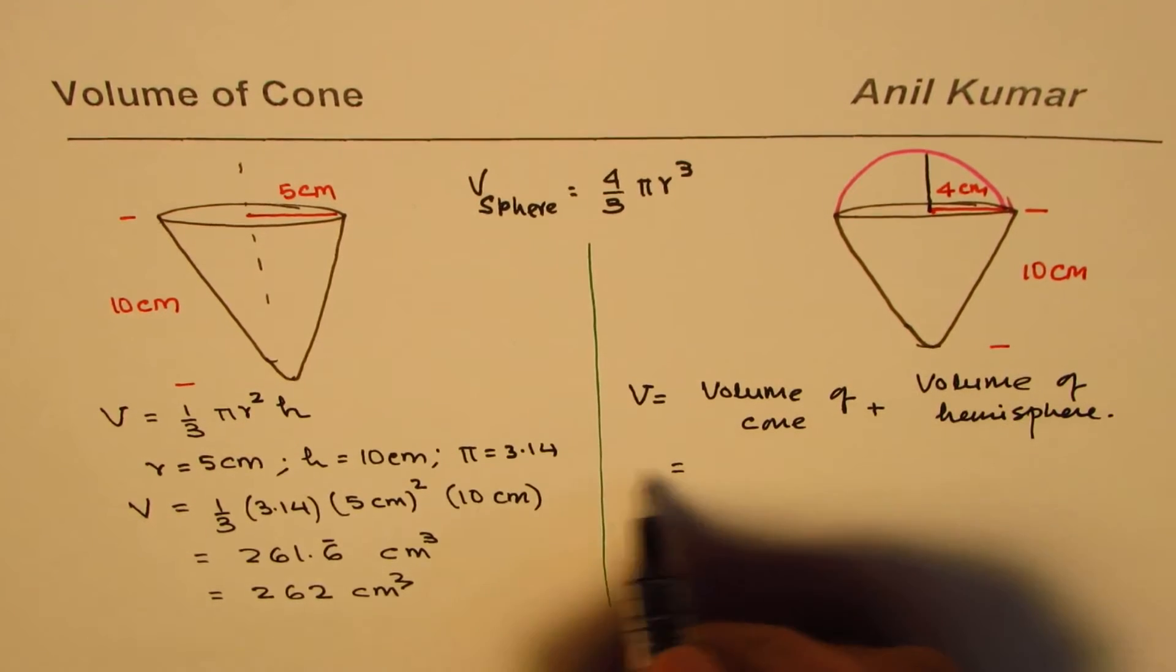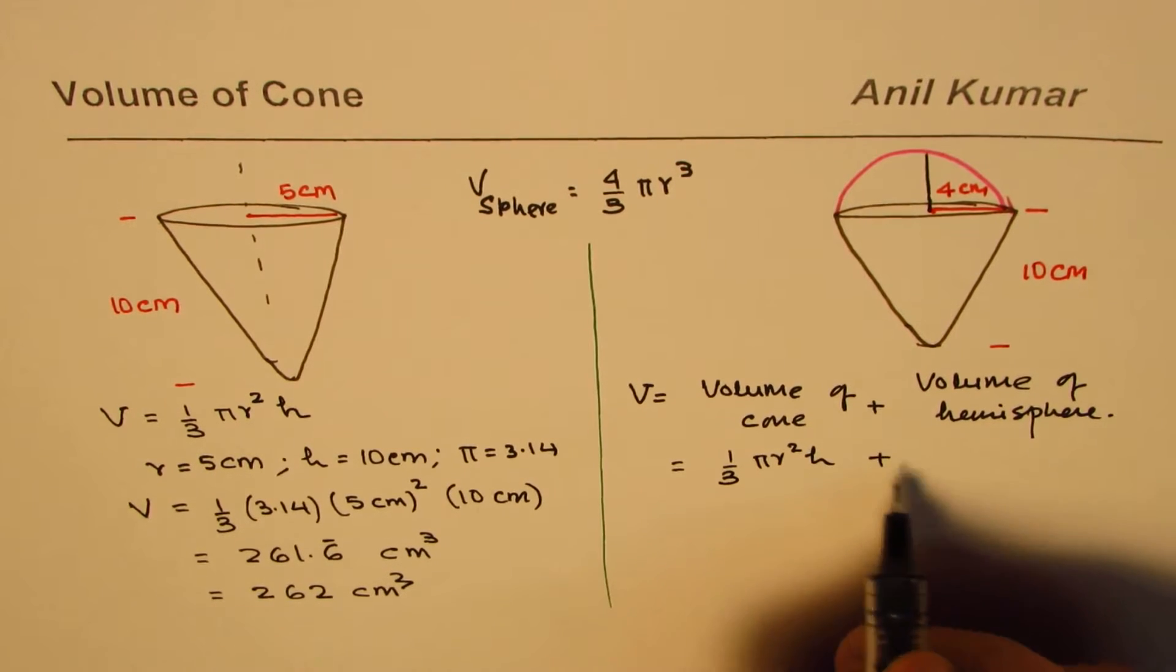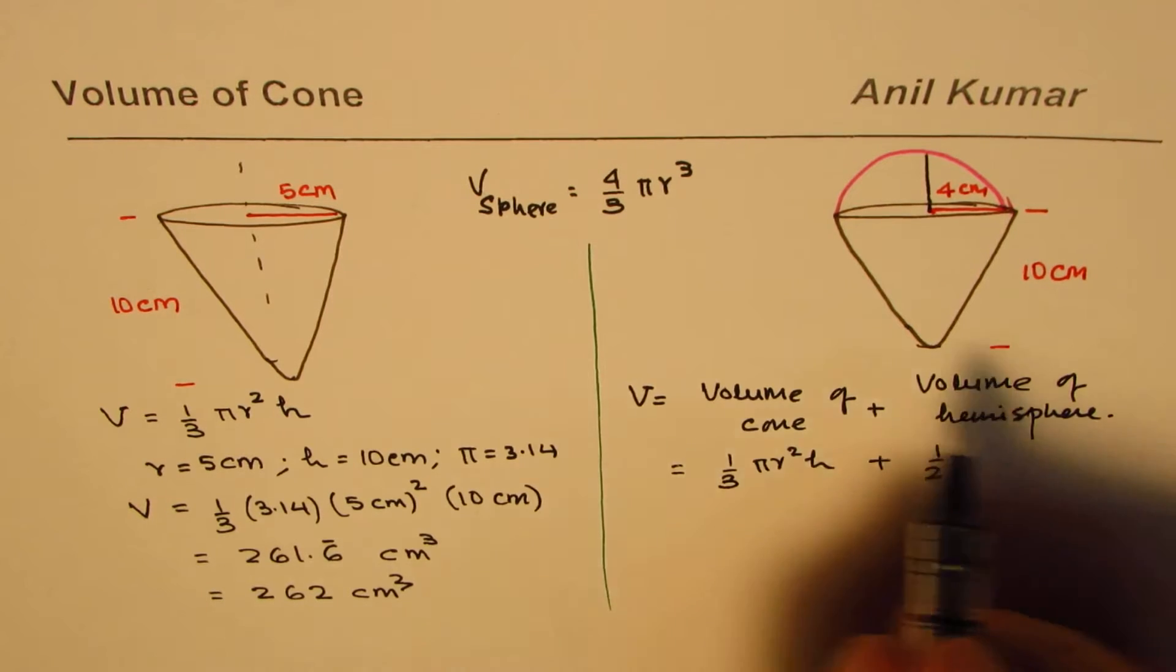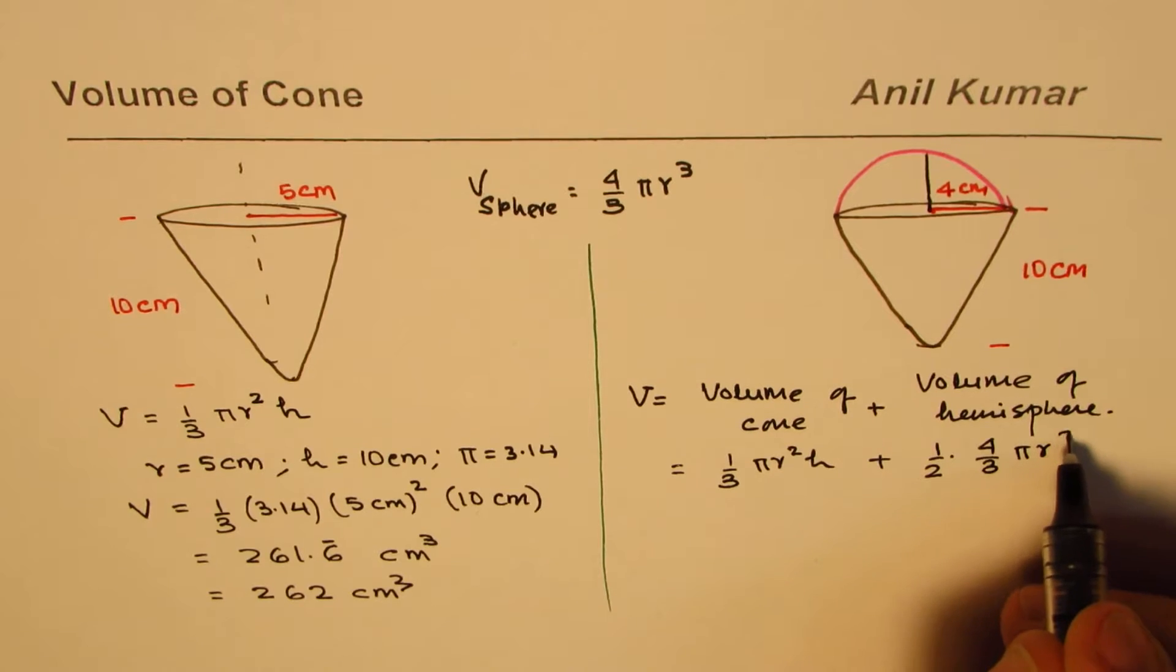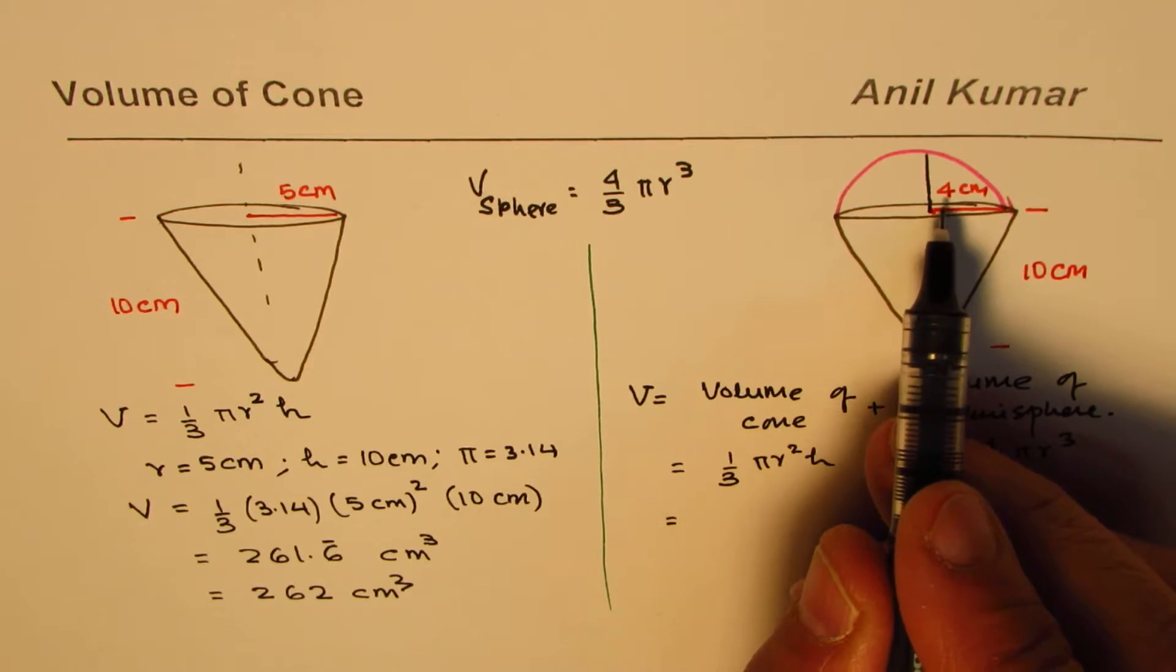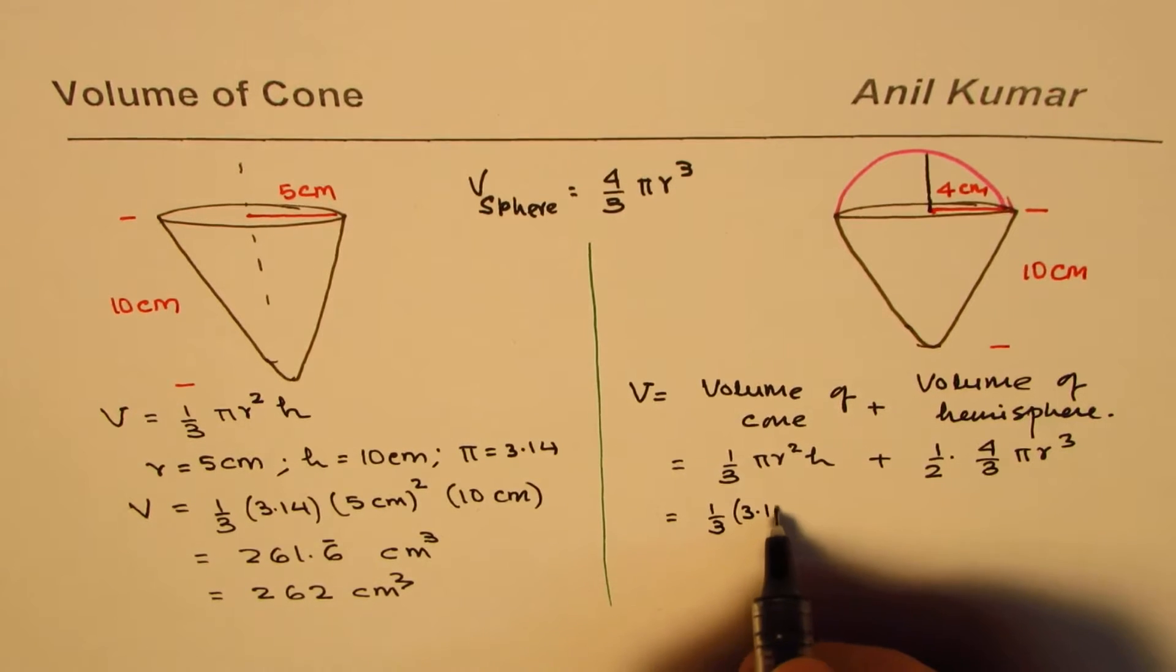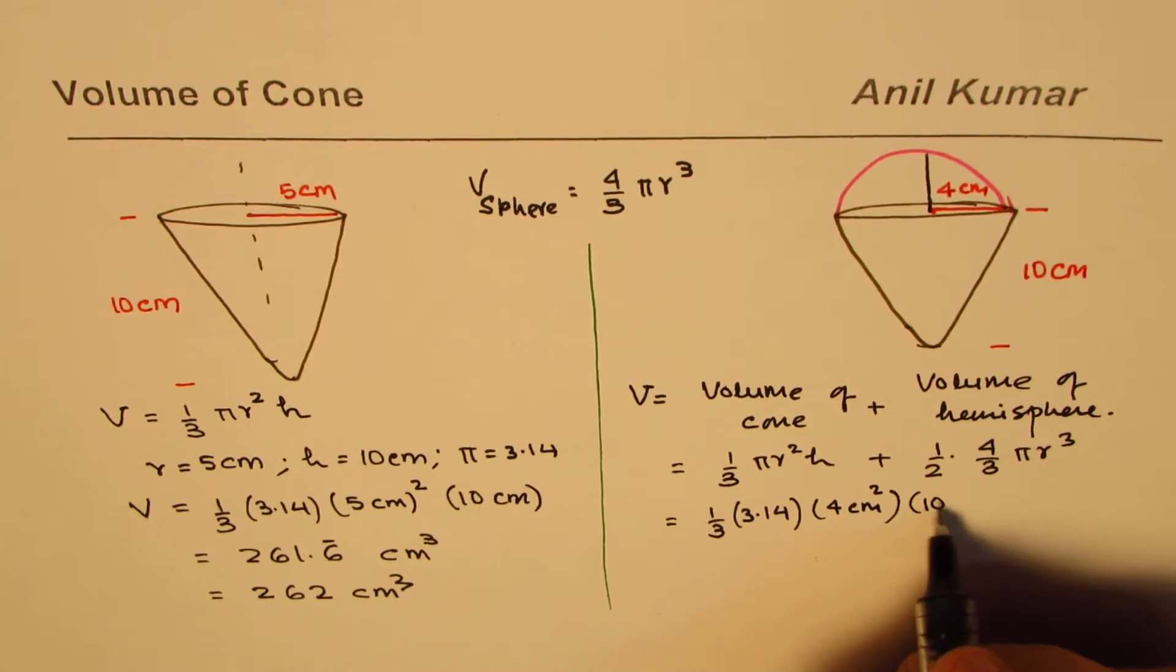Volume of cone formula is 1 by 3 pi r square h and half of volume of sphere which is 4 by 3 pi r cube, so half of this. Let's substitute the values. We are given radius as 4 centimeters. It is one third of 3.14, r is 4 centimeter square times height which is 10 centimeters.